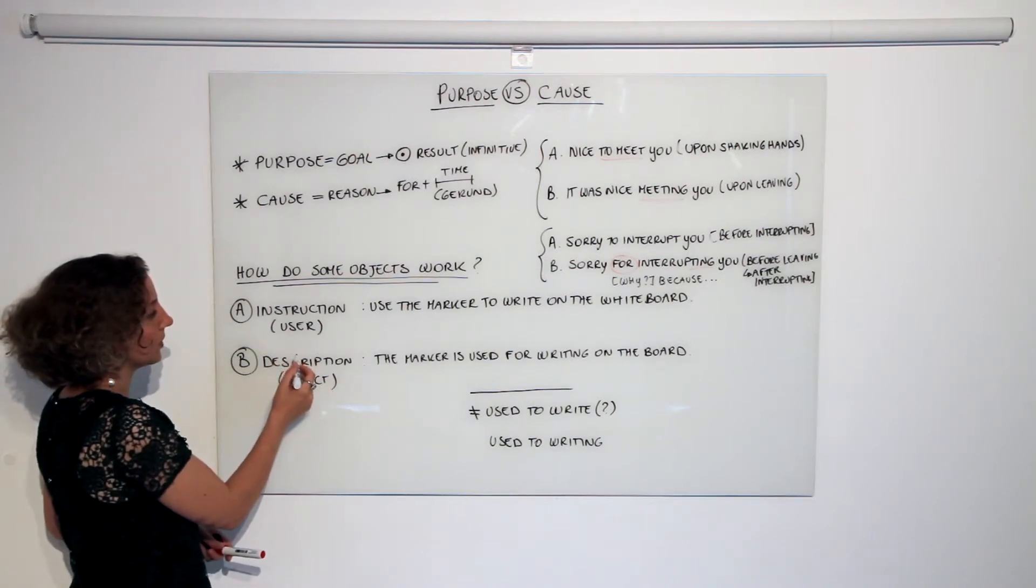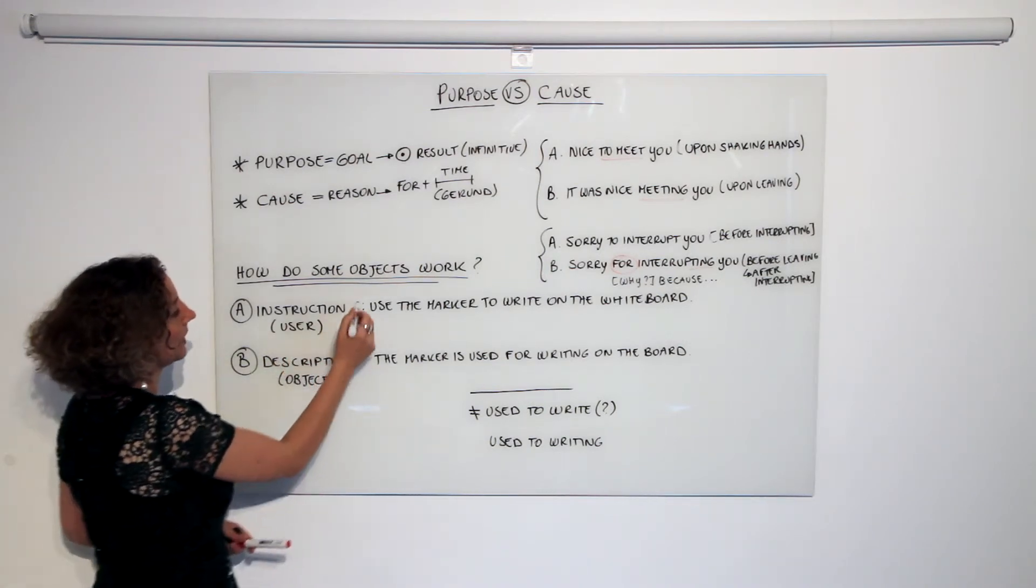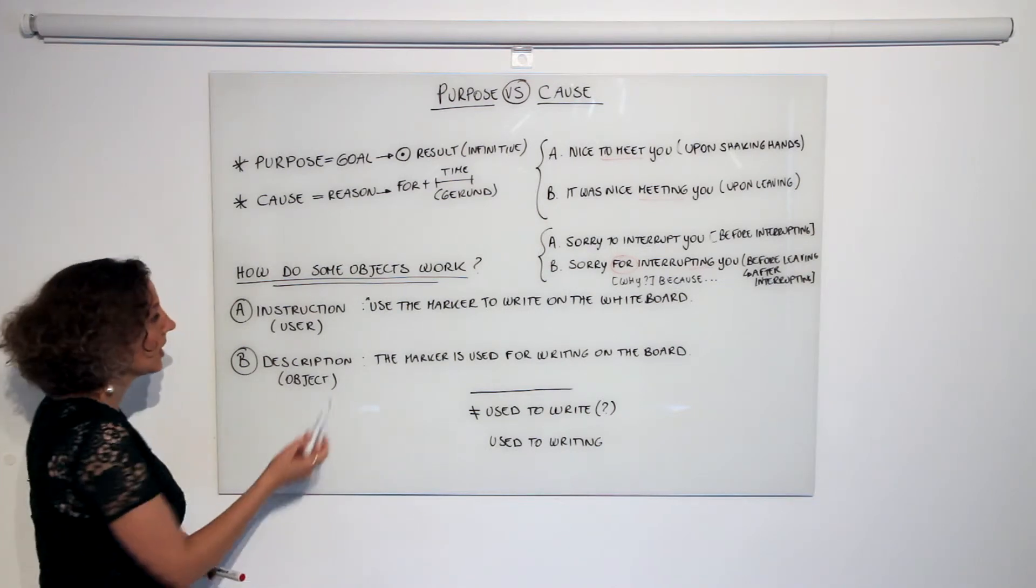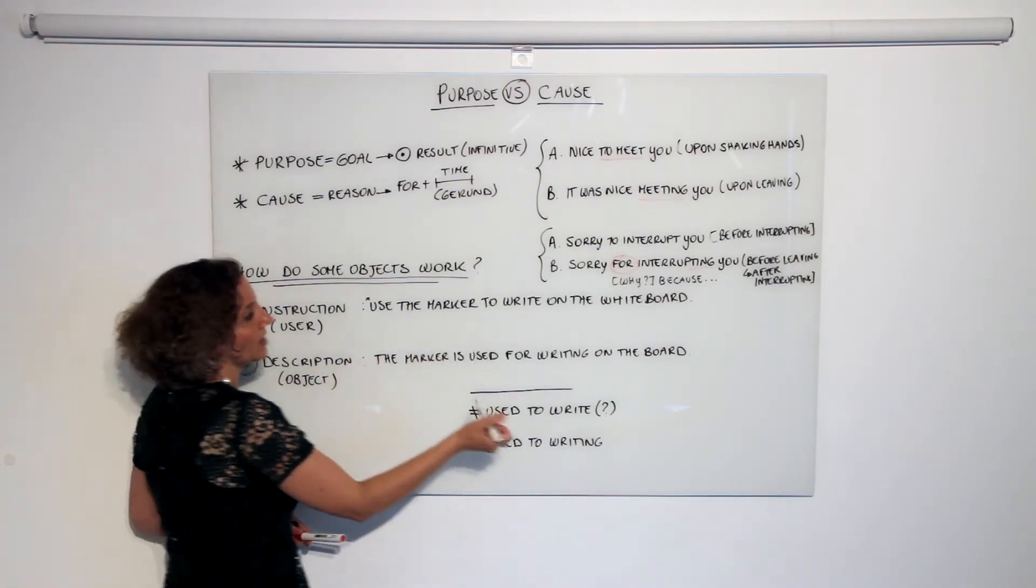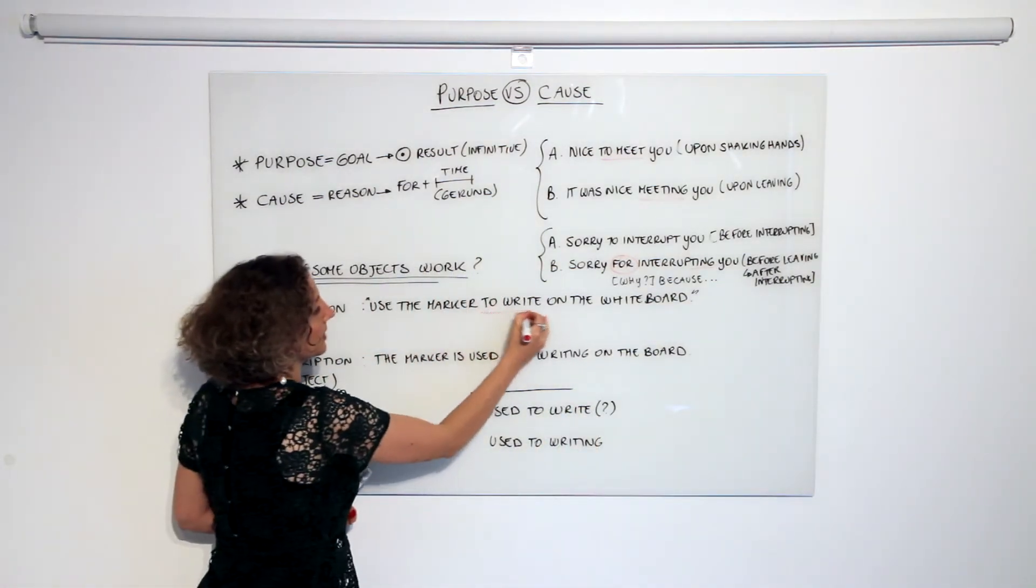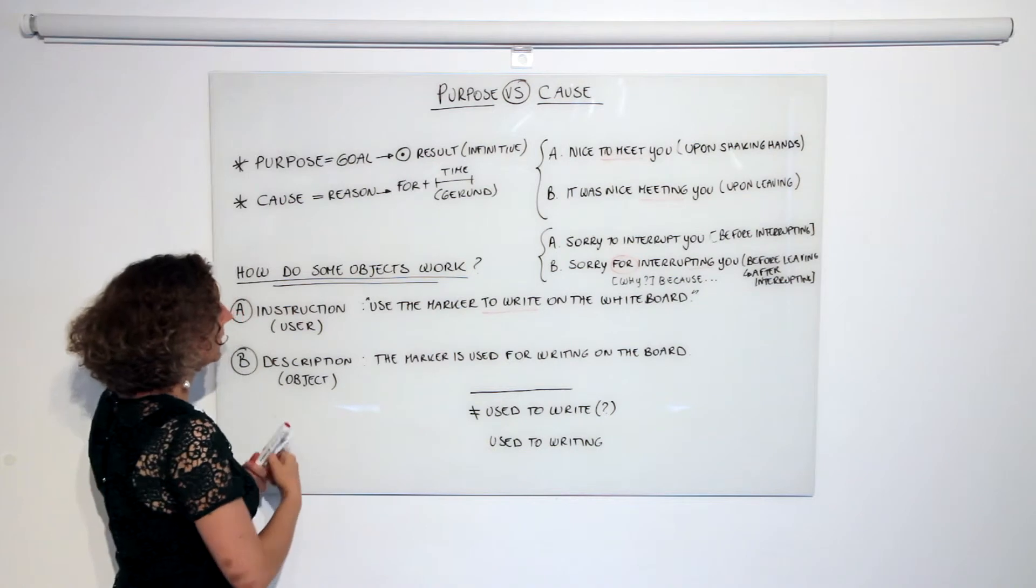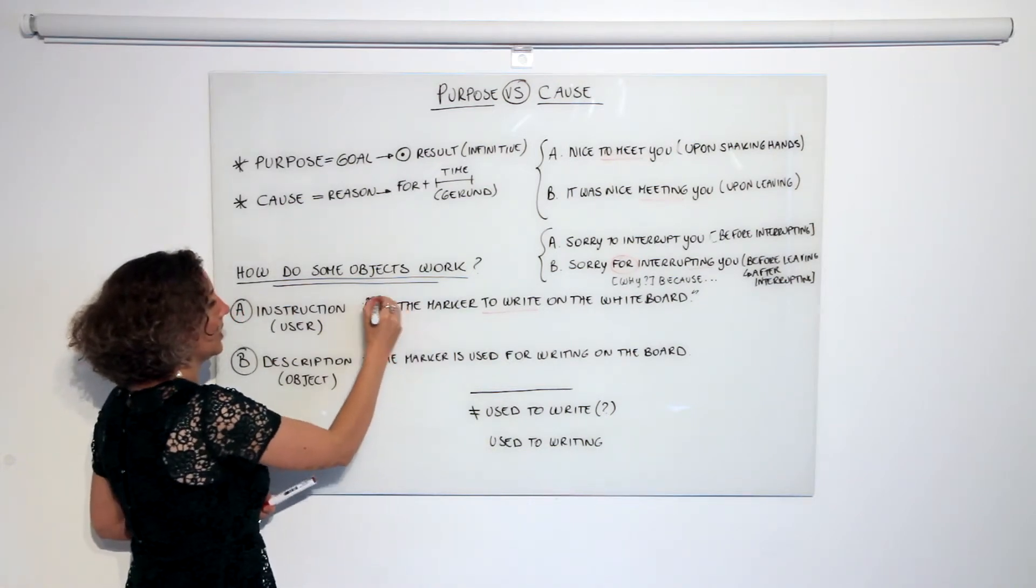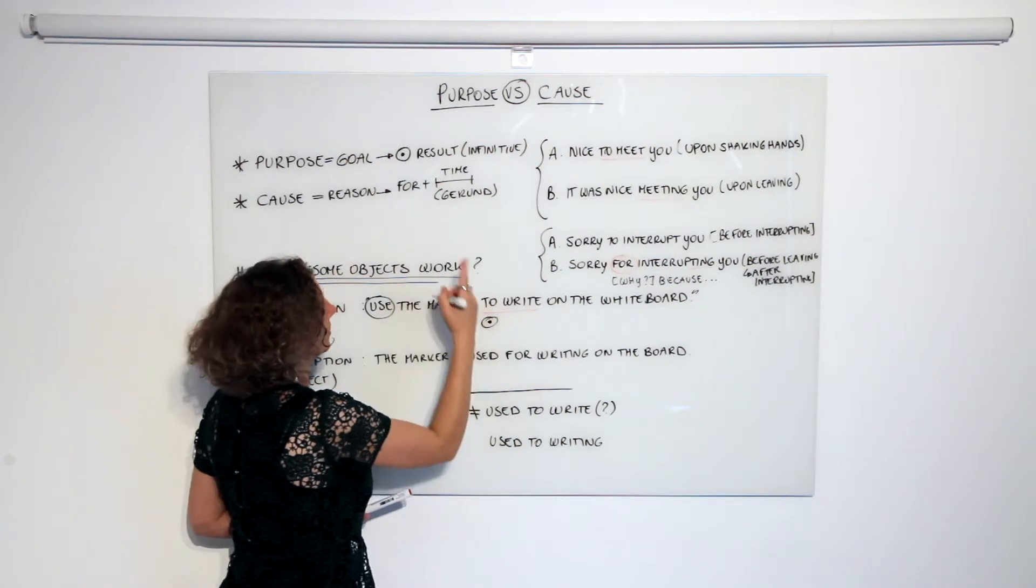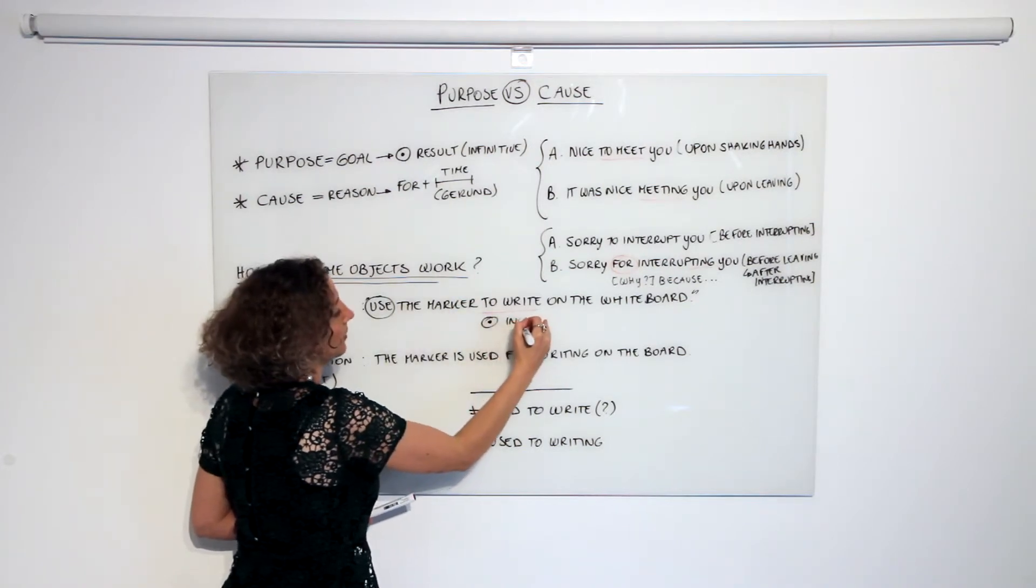If we focus on the user, what we do is something like, for example, if I want to explain how to use this marker: 'use the marker to write on the whiteboard.' Now what we're going to have is this infinitive following the imperative, which expresses the purpose, which is, just like we said, the result.